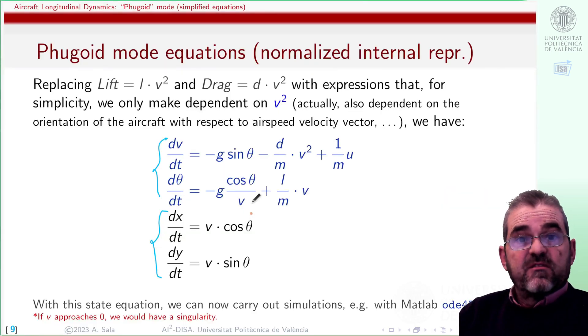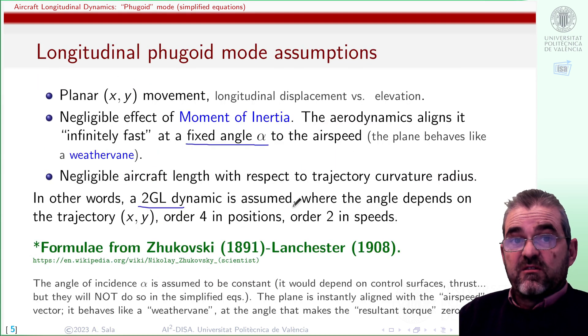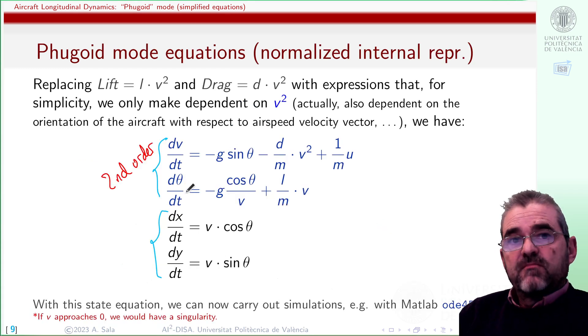The details on the simulation code are omitted for brevity in this video because it's a matter of setting an initial condition and feeding these equations to a numerical integrator. Note that as we are dividing here by the speed we have singularity if speed gets close to zero and apart from that if we have aggressive maneuvers or movement of control surfaces these assumptions may cease to hold.